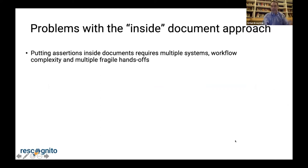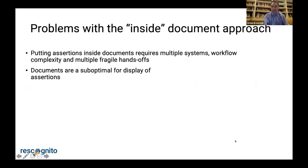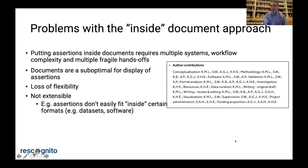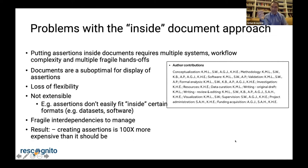The problems with the inside-document approach are that the workflow systems are complex to change and there are many fragile handoffs. The documents are suboptimal for the display of assertions — for example, with credit terms, people are recognized by their initials and organized by term rather than by person, which is what you'd really want to see. There's a loss of flexibility, the system isn't extensible, and for some formats such as datasets or software, it's very difficult to put assertions into the digital object. The key thing is that these assertions cost 100 times more than they should to collect.